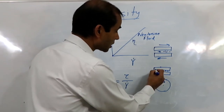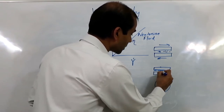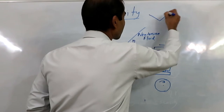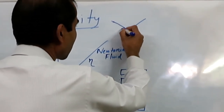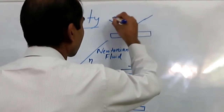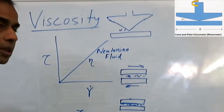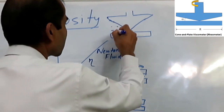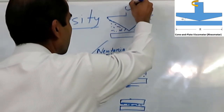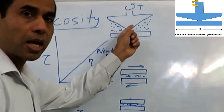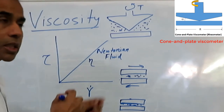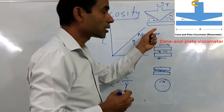One problem with the parallel plate method is that getting two perfectly parallel plates is quite difficult. To solve this, the top plate is made in the form of a cone with a very small inclination angle, and the bottom plate is a circular disc. This is called the cone and plate geometry. We fill this geometry with the liquid, and we can measure the shear stress by measuring the torque applied. There is an equation to find the viscosity in this geometry, and this is what we do in the rheometer.